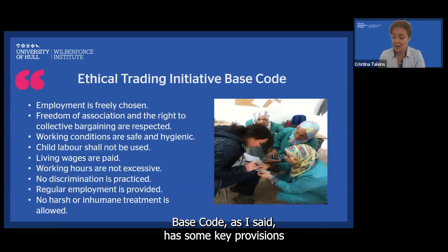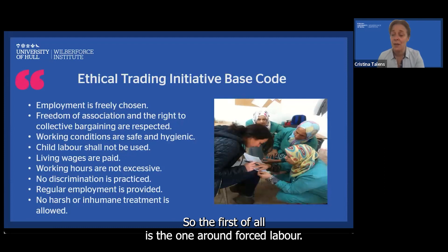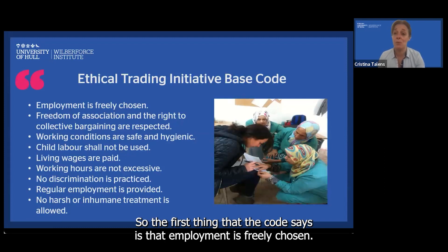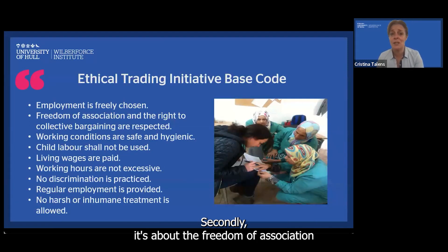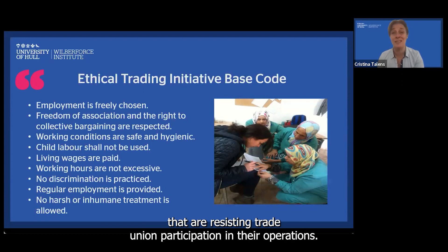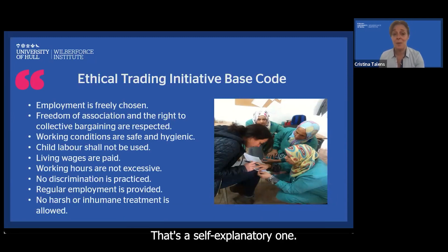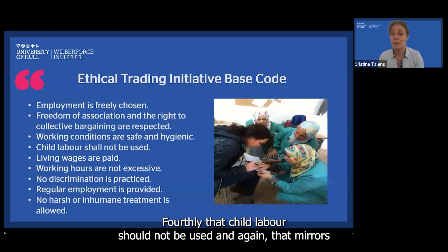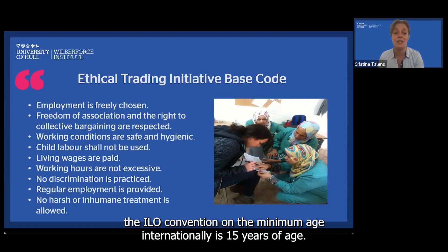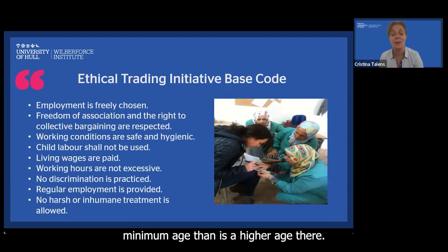The Ethical Trading Initiative base code has key provisions brought together through ILO conventions. The first is around forced labour — employment is freely chosen. The second is about the freedom of association and the right to collective bargaining. There are a lot of companies that are resisting trade union participation, so the ETI base code asks for worker committee or worker voice mechanisms to be installed. The third provision is that working conditions are safe and hygienic. The fourth is that child labour shall not be used — the minimum ILO convention age internationally is 15 years of age, or higher if your local legislation requires it.